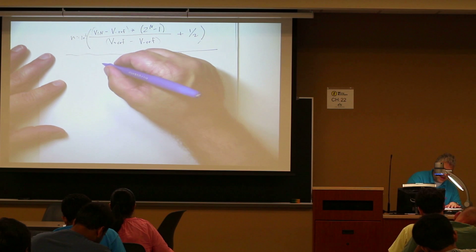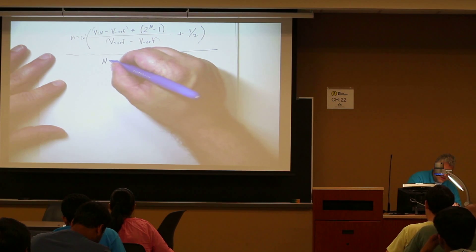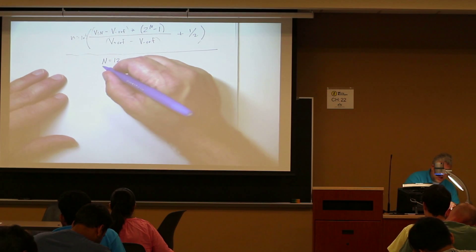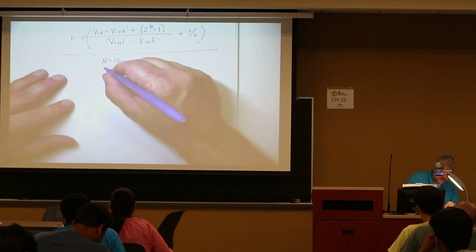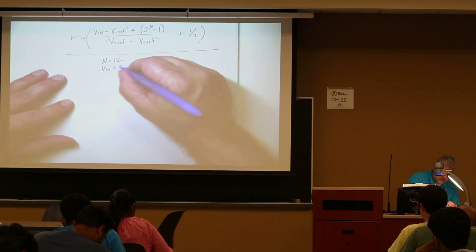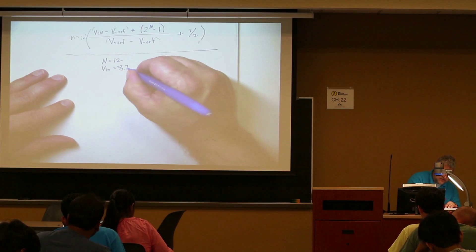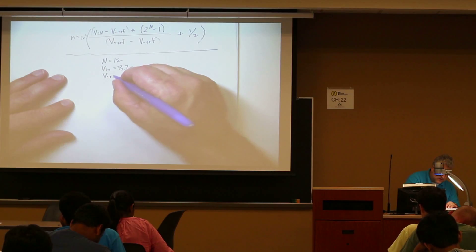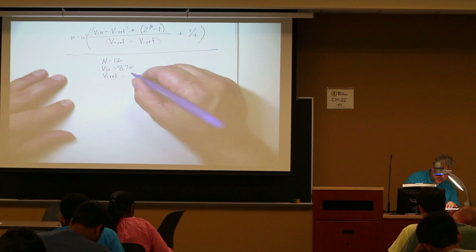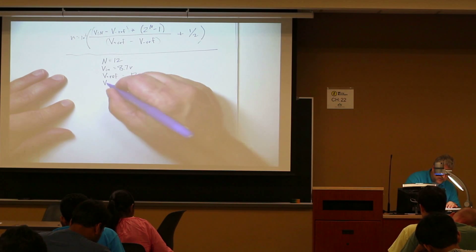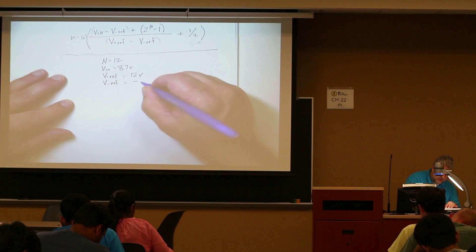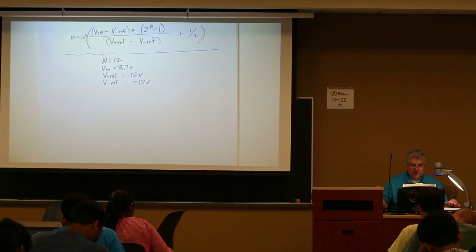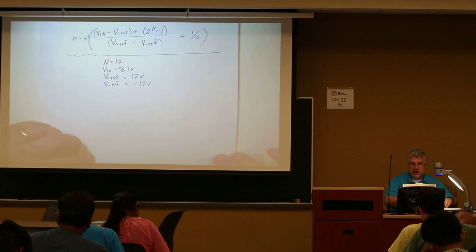At this point, let's take another problem. In this case, N is equal to 12, VN is equal to 8.7 volts, our V plus ref is going to be equal to 12 volts, and our V minus ref is going to equal minus 12 volts. Go ahead and go through the problem and determine what this answer is.